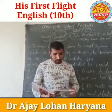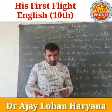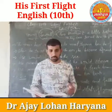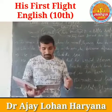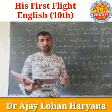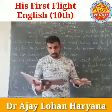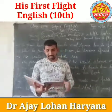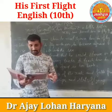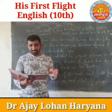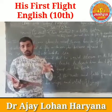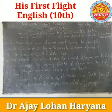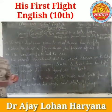Now we are going to start reading the lesson. 'The young seagull was alone on his ledge.' The young seagull, as I told you, is a sea bird. He was alone on his ledge — a ledge means a part of a cliff that is jutting out, a narrow horizontal surface projecting from a wall or a cliff.